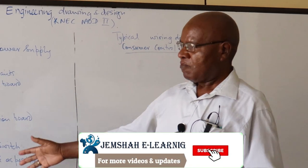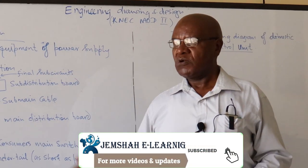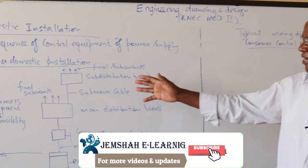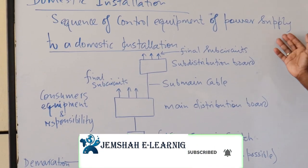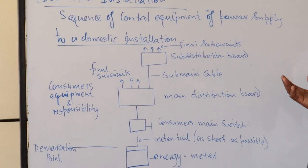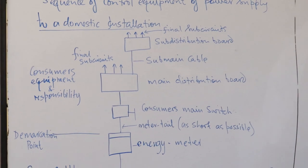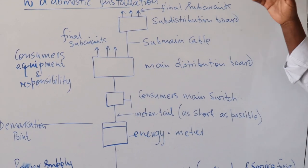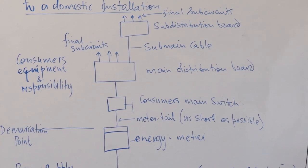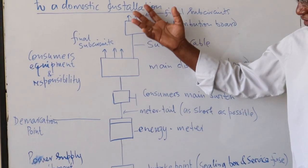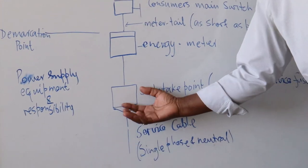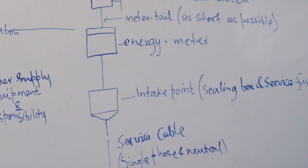As I said, a practical bit is what is wanted in the market. Here I have done a single line diagram of the sequence of control equipment of power supply to a domestic installation. In the past, when supplying power to a domestic installation, they used to come from overhead, take the cable down underground, and then it comes up into a building, and then the connection will be made.